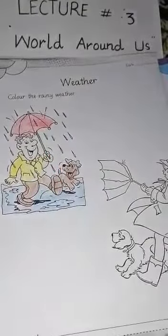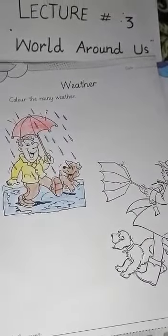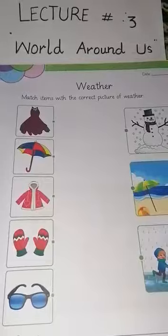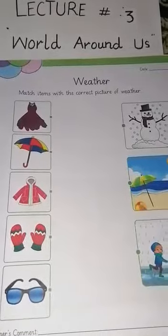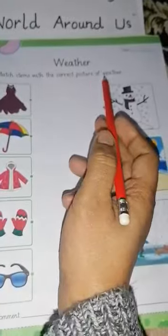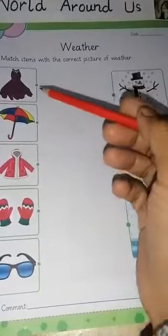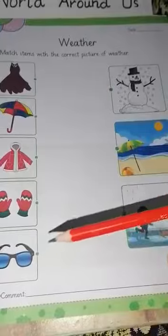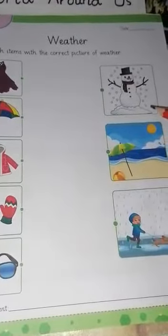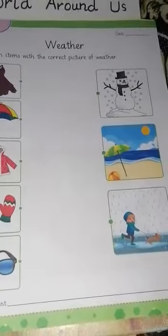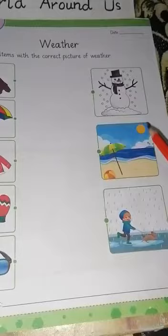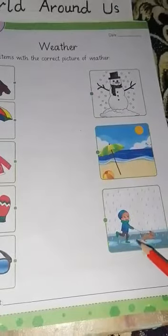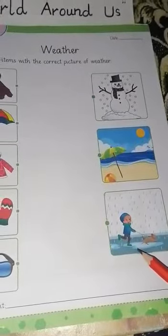Now move on to the next page, page number 55. In this page we match items with the correct picture of weather. Here are some things we wear in different weather, and here is the weather. This is snowy weather. This is sunny weather. And this is rainy weather.